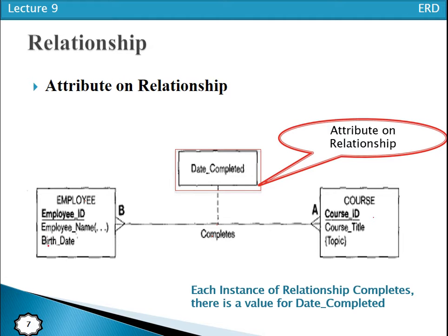Consider the attribute 'date completed.' If we attach it to the Employee entity, one employee may complete ten different courses on different dates. If we attach it to the Course entity, one course may be completed by different employees at different times — two months ago, five months ago, and so on. So we cannot associate this attribute with either entity type. Whenever an attribute cannot be associated with any participating entity type, we must associate it with the relationship.